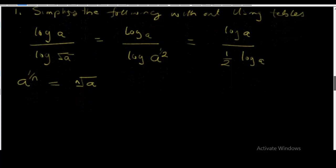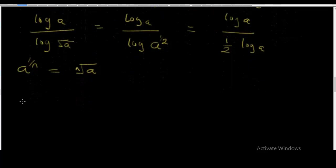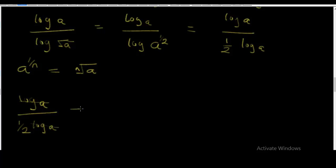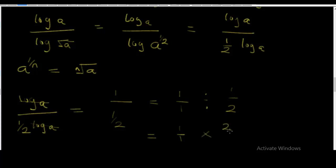So we now have log a all over (1/2) log a. The log a in the numerator cancels the log a in the denominator. You are left with 1 over (1/2), which is the same as 1 ÷ (1/2) = 1 × (2/1) = 2. Therefore the answer is equal to 2.